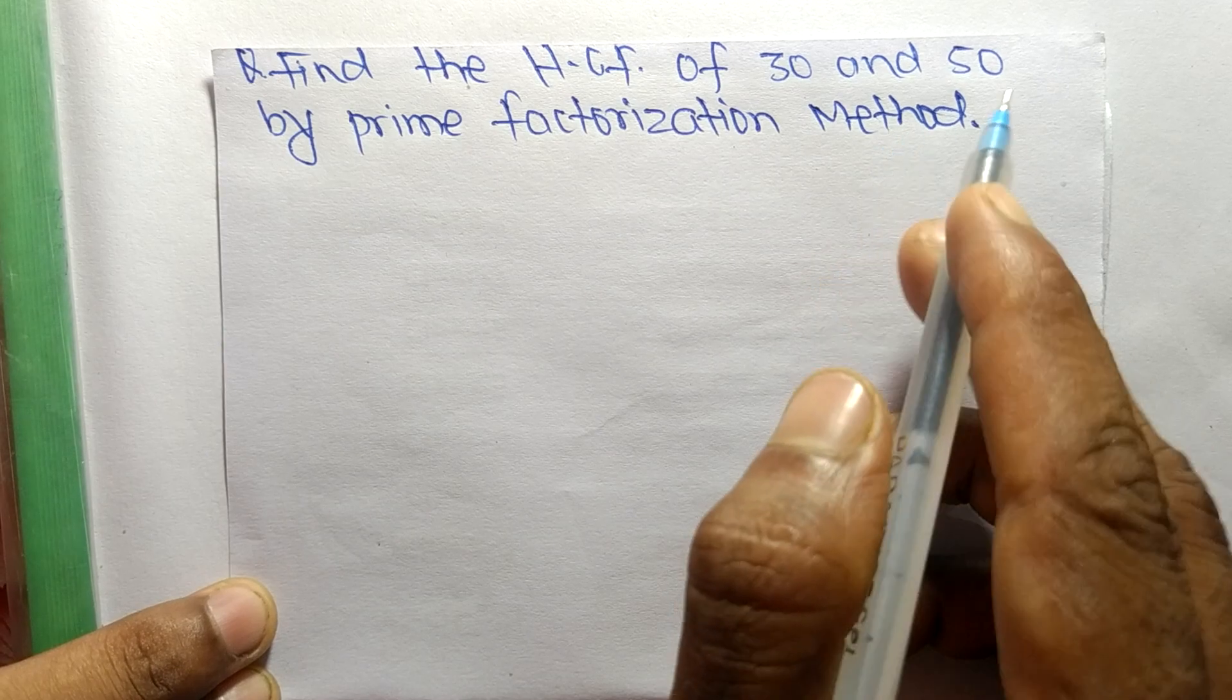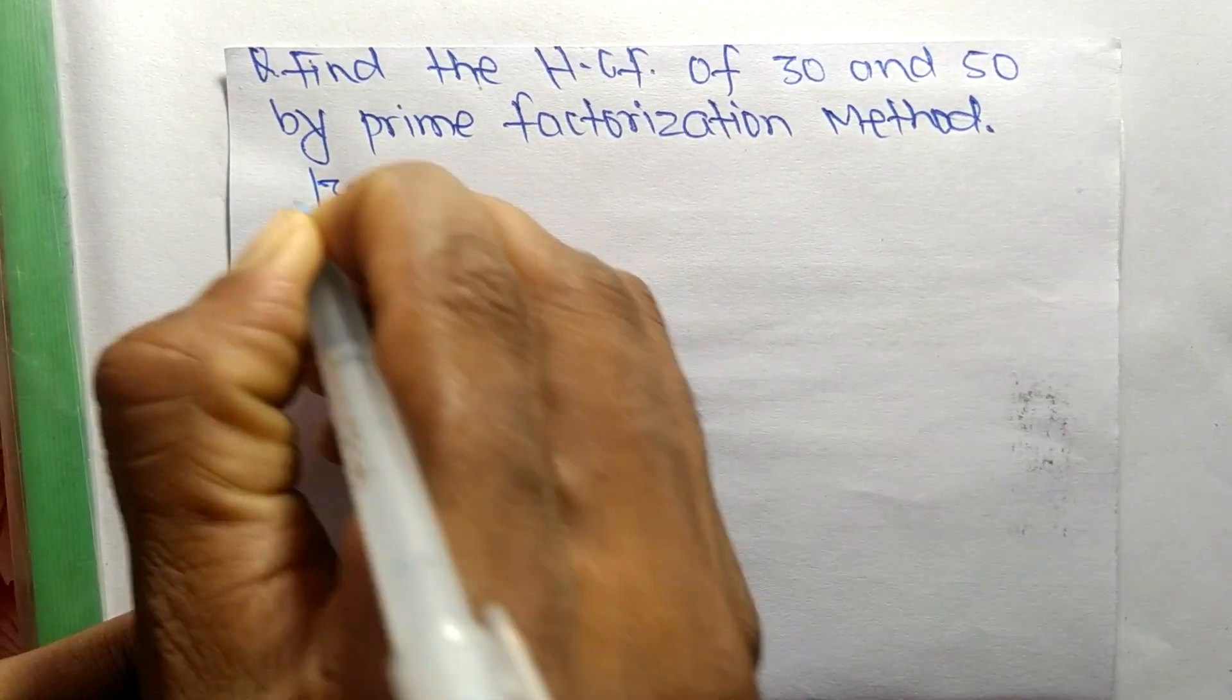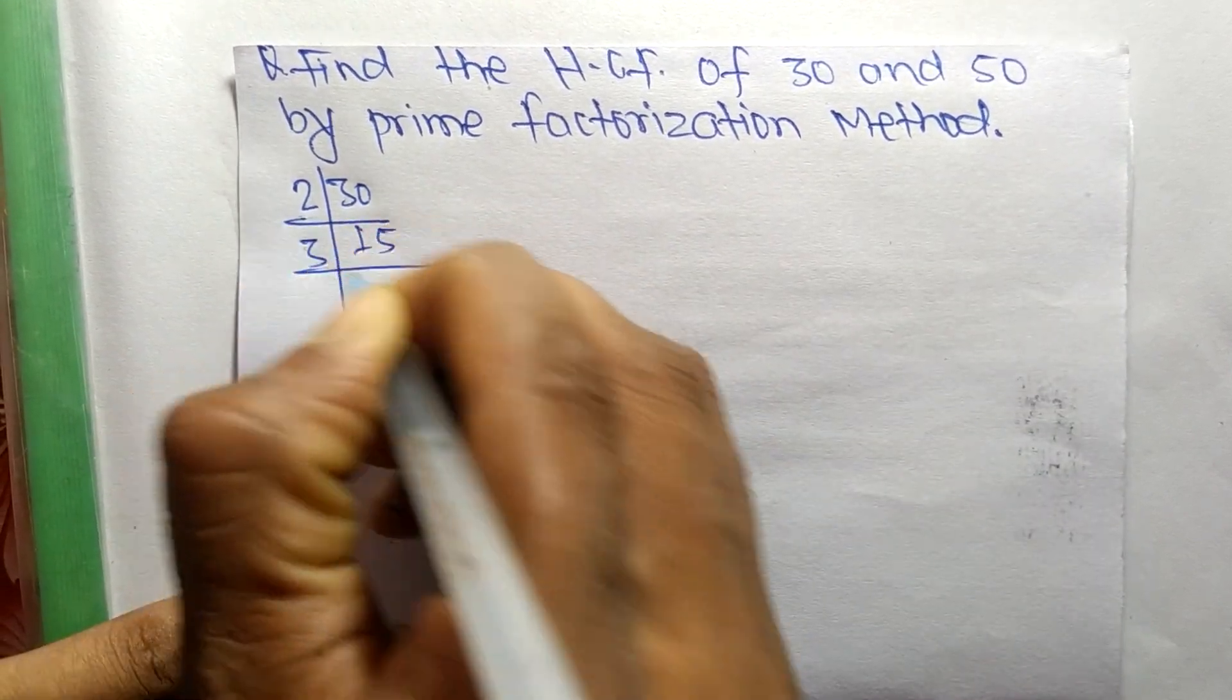So first we find out the prime factors of 30. So it is 2 times 15 equals 30, 3 times 5 equals 15, and 5 times 1 equals 5.